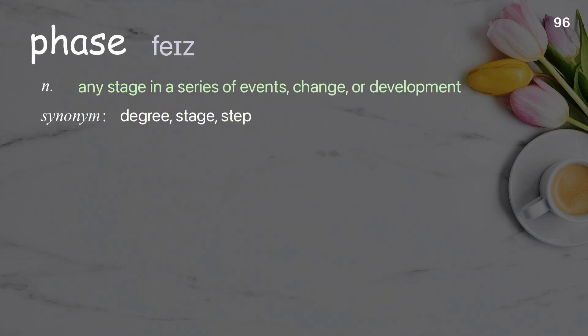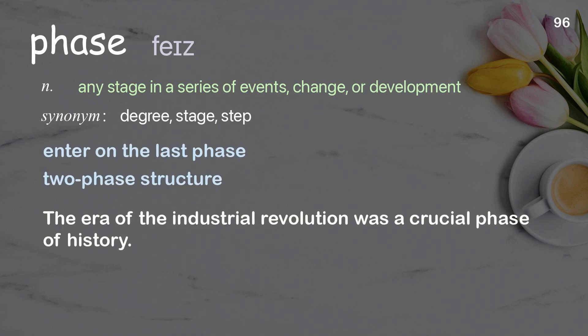Phase: any stage in a series of events, changes, or development. Examples: enter on the last phase, two-phase structure. The era of the Industrial Revolution was a crucial phase of history.